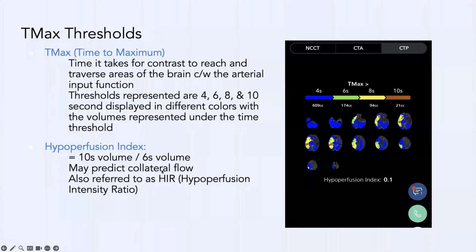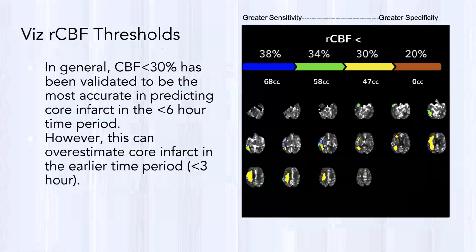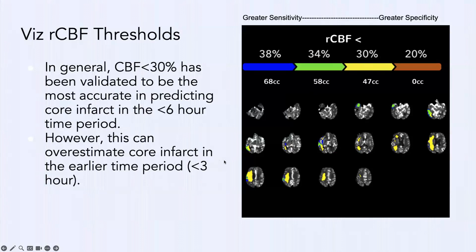The hypoperfusion index is used by some researchers but I personally do not use it. For core infarct thresholds, CBF <30% of normal has been validated as most accurate in predicting core infarct in the six-hour-or-less time period. For greater sensitivity you could use 38%; for greater specificity, 20%. The 30% threshold is your sweet spot, though it can overestimate core infarct in the earlier time period — less than three hours.